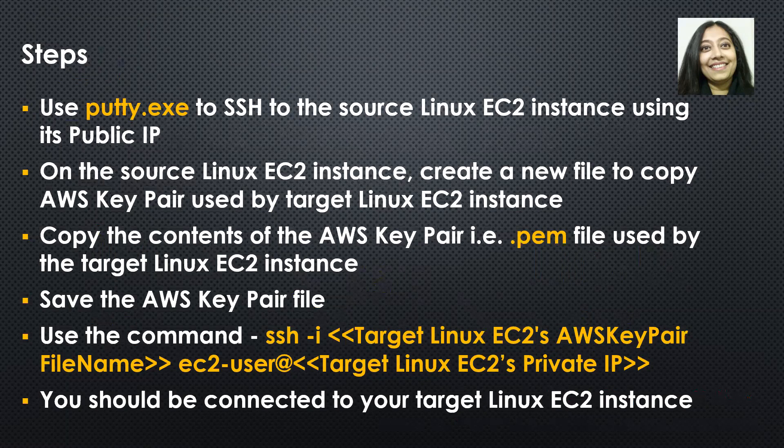The AWS key pair contents you need to copy is from the .pem file that is typically generated when you create an AWS key pair. Save the AWS key pair file, and then finally use the command on the screen to SSH from your source Linux EC2 instance to your target Linux EC2 instance. The command requires the target EC2 instance's AWS key pair and its private IP address, and eventually you will be connected via SSH to your target Linux EC2 instance.